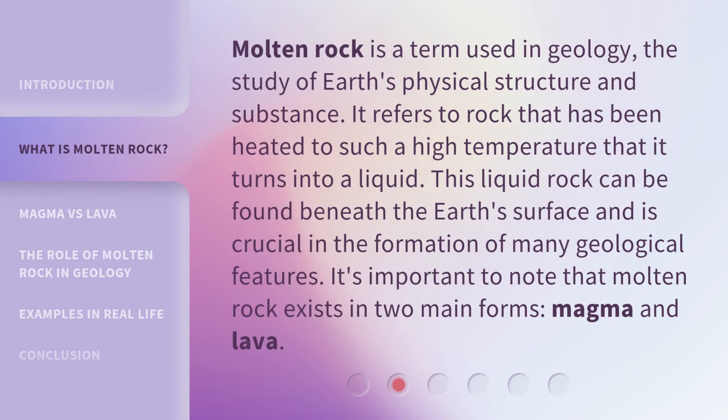Molten Rock is a term used in geology, the study of Earth's physical structure and substance. It refers to rock that has been heated to such a high temperature that it turns into a liquid. This liquid rock can be found beneath the Earth's surface and is crucial in the formation of many geological features.